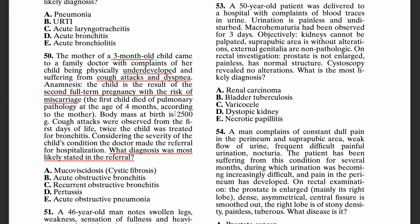The child's body mass is 2,500 grams — on the lower spectrum, indicating low weight. Cough attacks have been observed from the first days of life, and twice the child was treated for bronchitis. Considering the severity of the condition, the doctor made a referral for hospitalization. This is a classic case of cystic fibrosis, mainly because the child is presenting with cough attacks and is underdeveloped for three months of age, and has a history of two bronchitis infections.